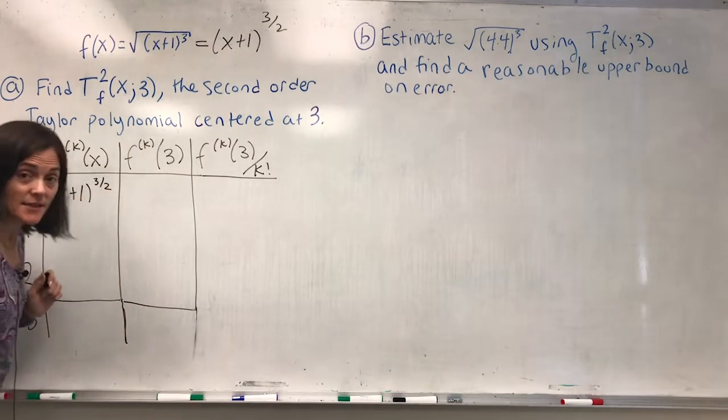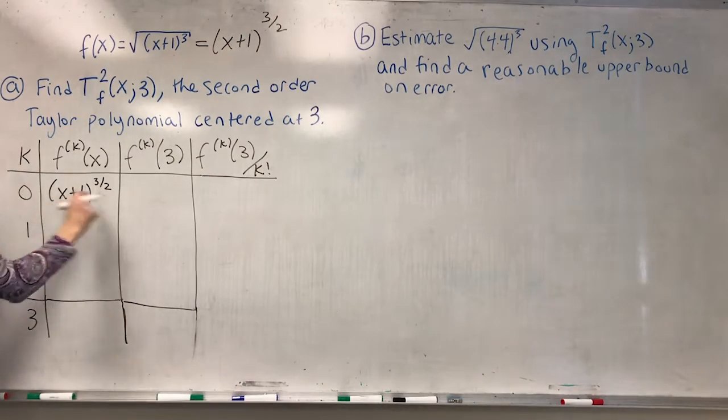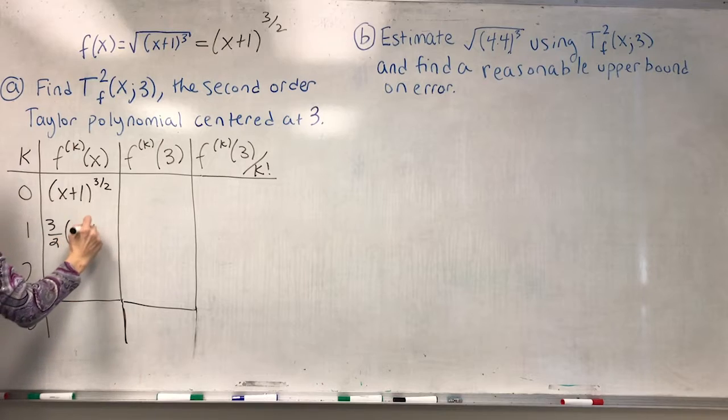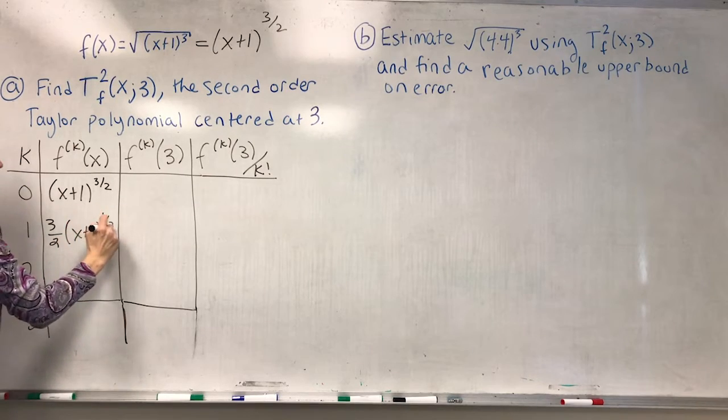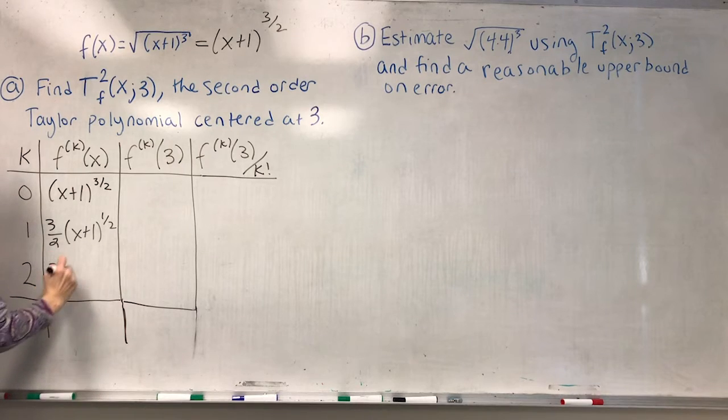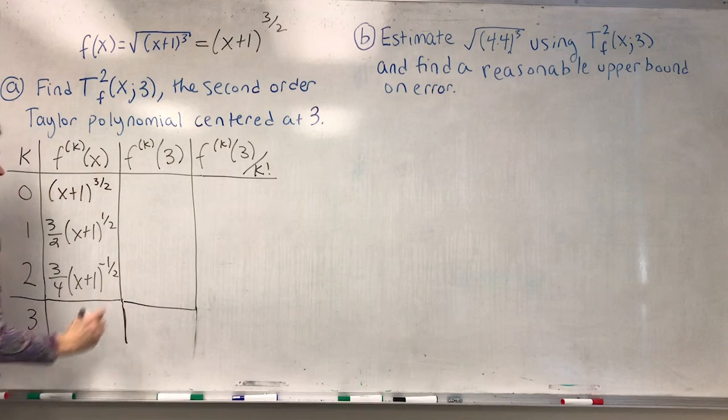My original function is here. Now I start differentiating. This technically is a chain rule, except the inside function has derivative 1. So it looks just like power rule, even though it is a chain rule.